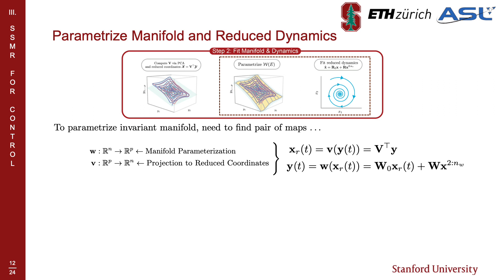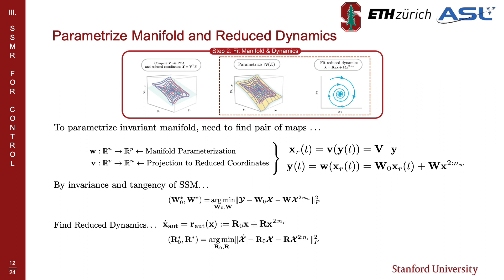Using the properties of the SSM, we can formulate a regression procedure to find the parametrization of the manifold mappings and the reduced dynamics. We seek a pair of maps that go from the reduced to observed coordinates and vice versa, and by the smoothness of the SSM, we can approximate the SSM parametrization by Taylor expansion. Given the properties of the SSM, we can then carry out polynomial regression to find the coefficients of the parametrization and the reduced autonomous dynamics.